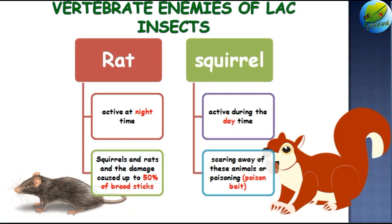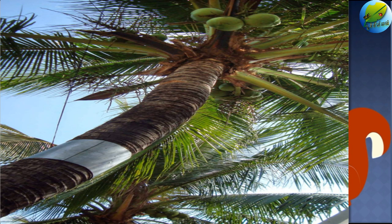Coming to the vertebrate natural enemies, there are two important ones: the rat and the squirrel. Rats are active during the night time and squirrels are active during the daytime, so they don't compete for food. They feed on the lac insects, causing around 50 percent loss in the brood sticks. For management, we can use garlic and black pepper sprays around the field as they don't like the smell. We can also scare them off with loud noises and prevent them from climbing trees by covering the trunk with plastic barriers, similar to what is done in coconut cultivation to avoid rodent pests.